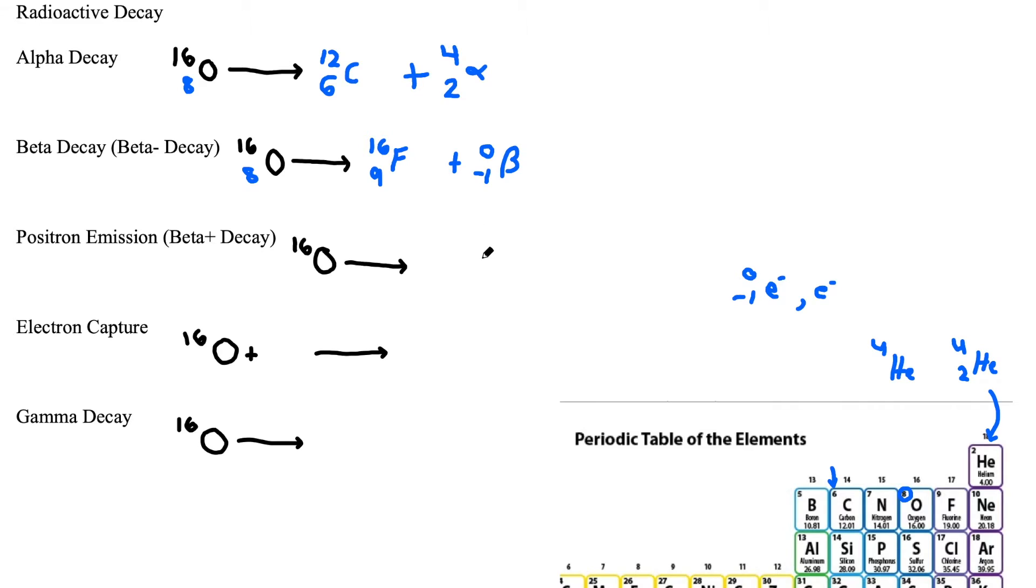Now positron emission is something also called beta plus decay. So a beta plus is sort of like an electron that is turned positive. So we call it a positron. And we'll denote this with a beta.